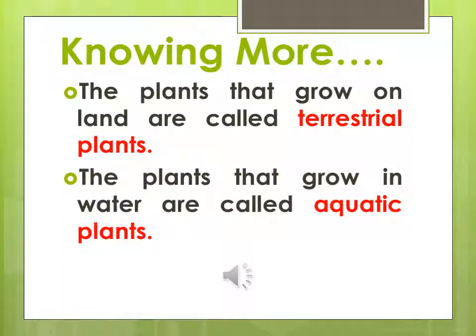Now let us know more about plants. The plants that grow on land are called terrestrial plants. You can see so many plants around you which are growing on land, like Ashoka tree, neem tree, mango tree, rose plant — all these plants are terrestrial.